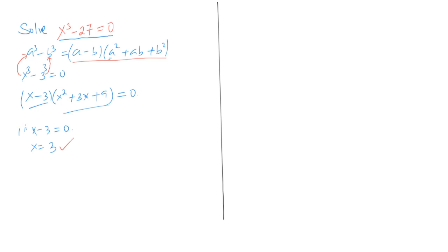On the other hand, we can also equate x squared plus 3x plus 9 to 0. As we can see, that is now a quadratic equation, and we can use the quadratic formula to solve it. The quadratic formula is: x is equal to minus b plus or minus the square root of b squared minus 4ac, all over 2a.